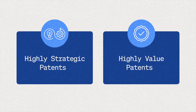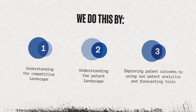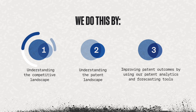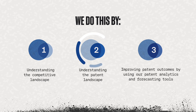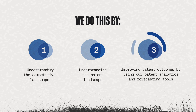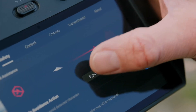Here at Outlier, we talk about strategy and value every single day. But how do we identify strategic and valuable opportunities? We identify them by: one, understanding the competitive landscape; two, understanding the patent landscape; and three, improving patent outcomes by using our patent analytics and forecasting tools.